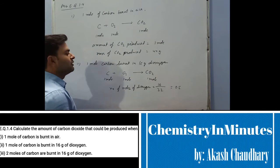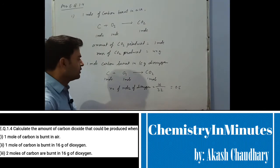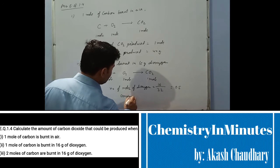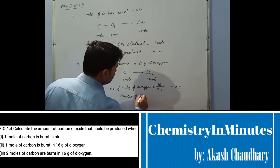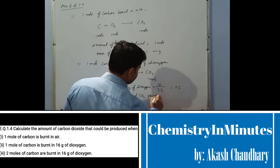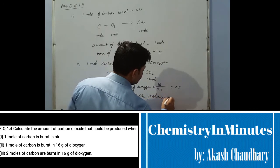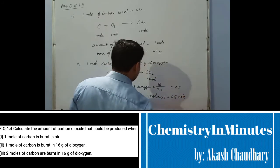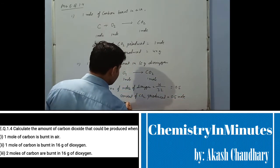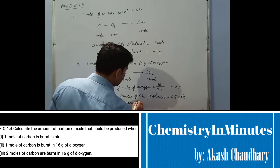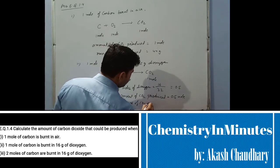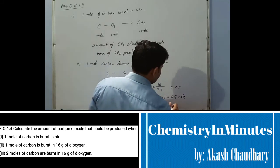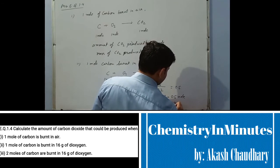In this reaction, dioxygen is the limiting reagent. Therefore, the amount of CO₂ produced equals 0.5 mole, and the mass of CO₂ produced equals 22 grams.